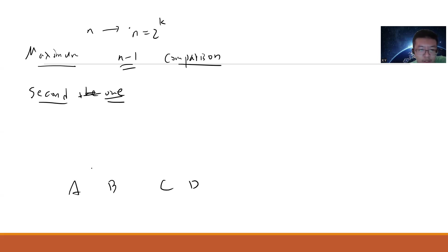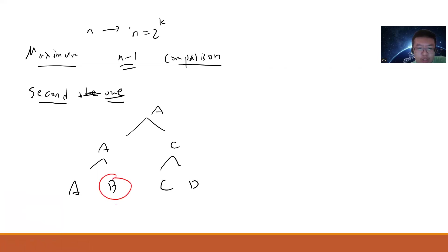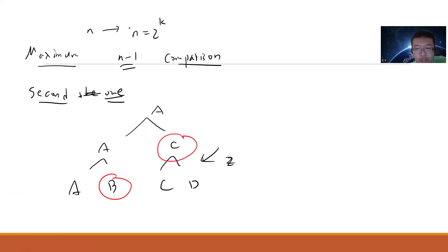So you have a, b, c, d. Let's say a wins, c wins, and a wins. Which one should be the second? B only loses to a, so b can be second. C can be second. But d cannot be second. So in this case we have two remaining candidates.